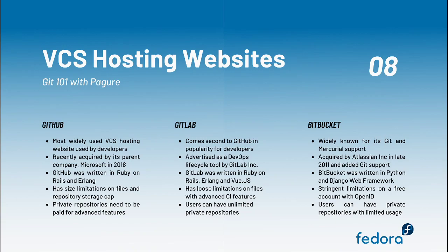Next up, we have GitLab. It comes in second in terms of popularity. Advertised as a DevOps lifecycle tool by GitLab Incorporated, it was written in Ruby on Rails, Erlang, and Vue.js, with many parts ported to Go for speed. As compared to GitHub, it has looser limitations on files with much more advanced features like continuous integration built right into it. Users can have an unlimited number of private repositories.